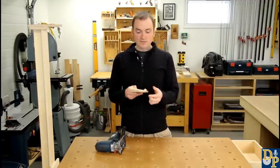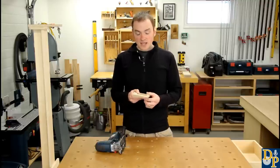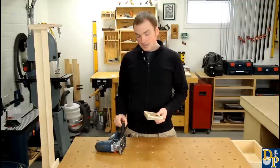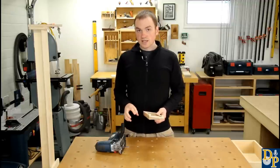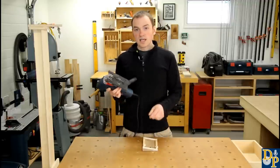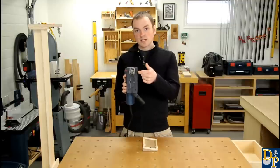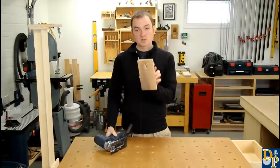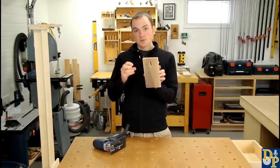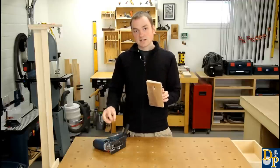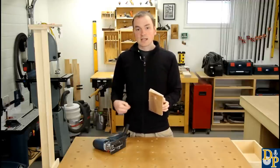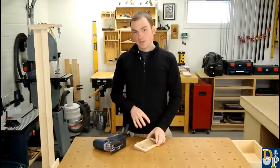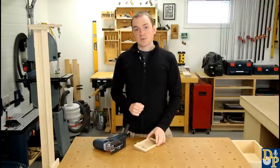And third, if your saw is equipped with dust collection like this one, it helps improve that dust collection. Rather than having a large opening in the base where dust can escape from, especially if you're close to an edge, it has just a small opening for the blade so it helps keep that dust contained inside the dust chamber and extracted to the vacuum. So I'll quickly show you how I made the base and then I'll show you how it works.